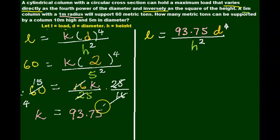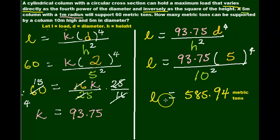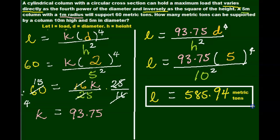Then we can plug our k equals 93.75 back into our original equation, and we want to find l in our final problem. So we're going to say l equals 93.75 times our new d, which is 5, to the fourth power, over h, which is 10 squared. And when we simplify that, we get our load is 585.94 metric tons, rounded to two decimal places. Even though they didn't tell us how many decimal places we rounded to, we're going to do it to two decimal places.